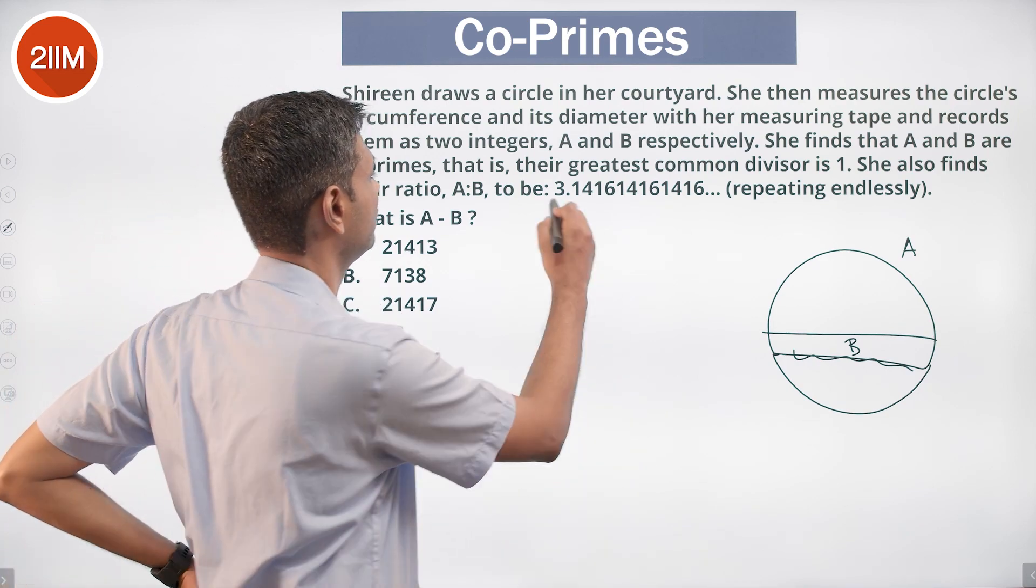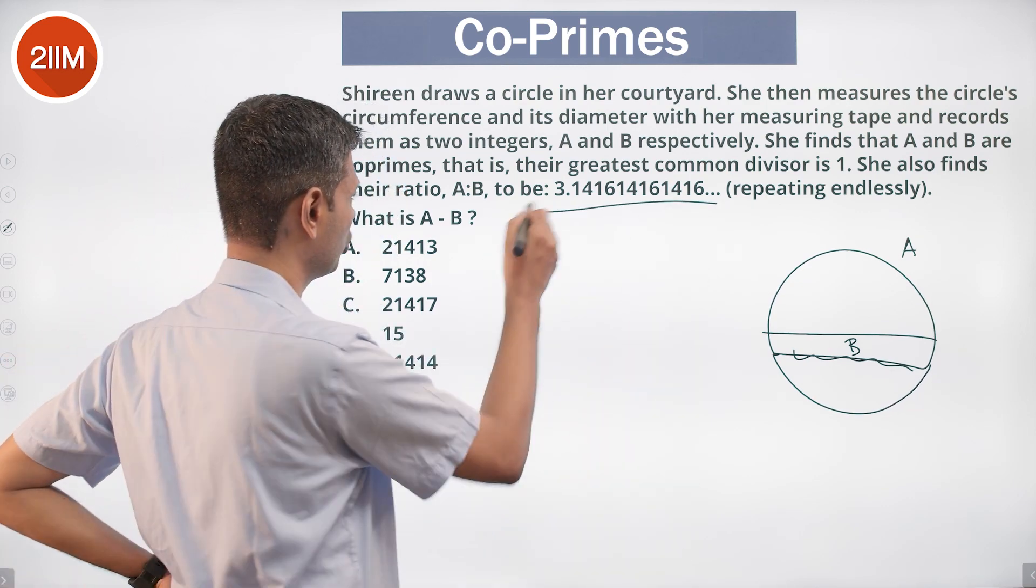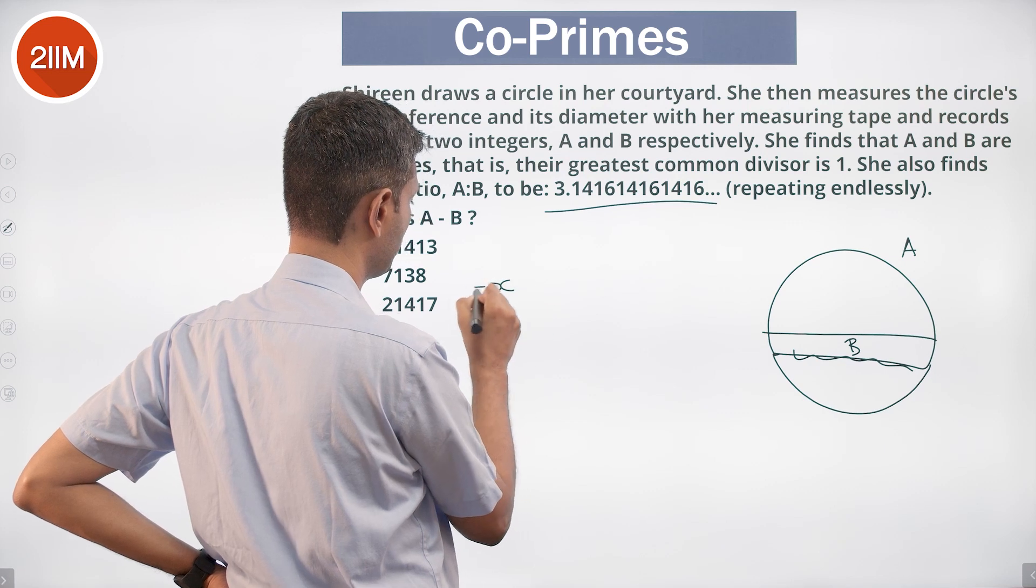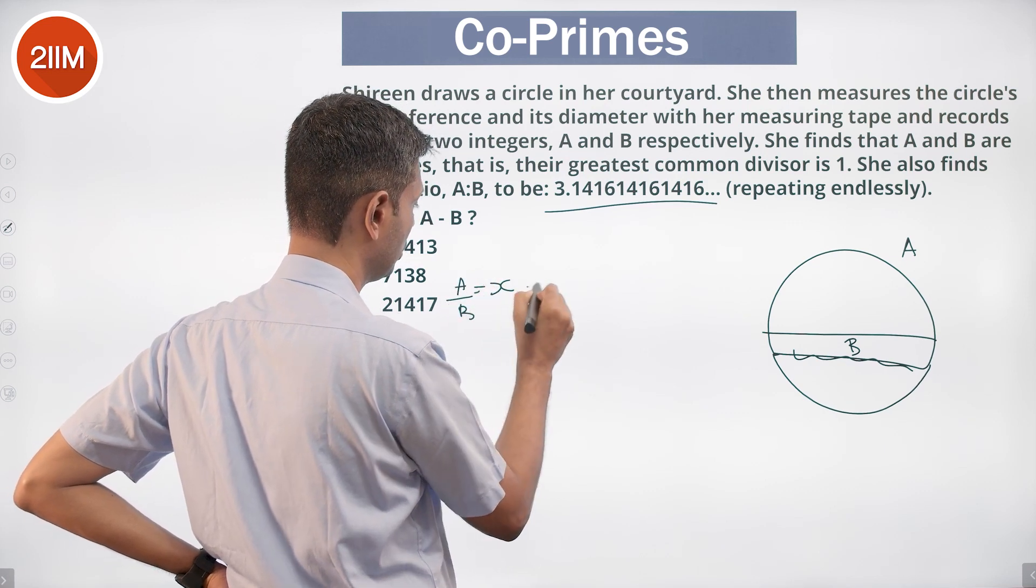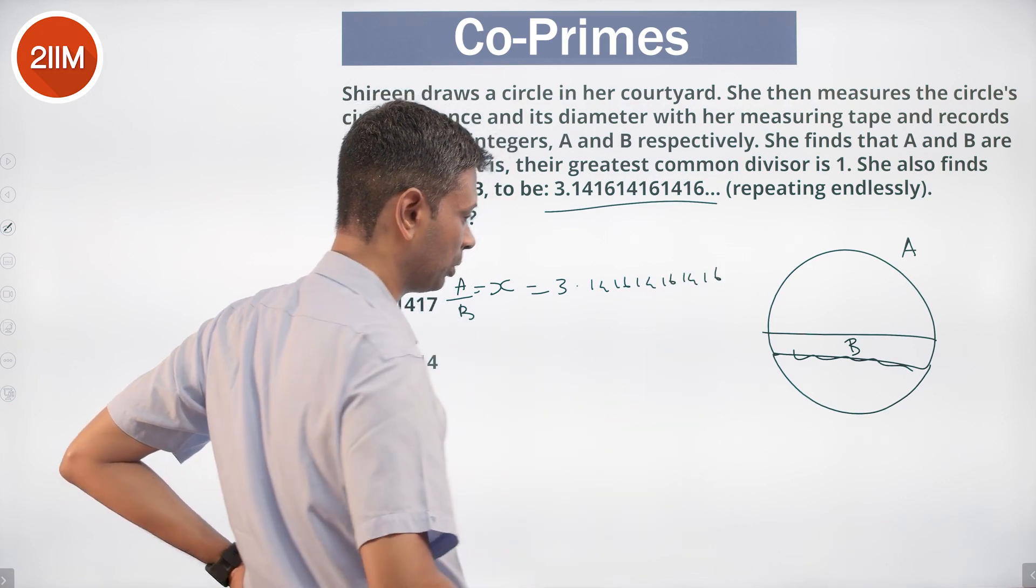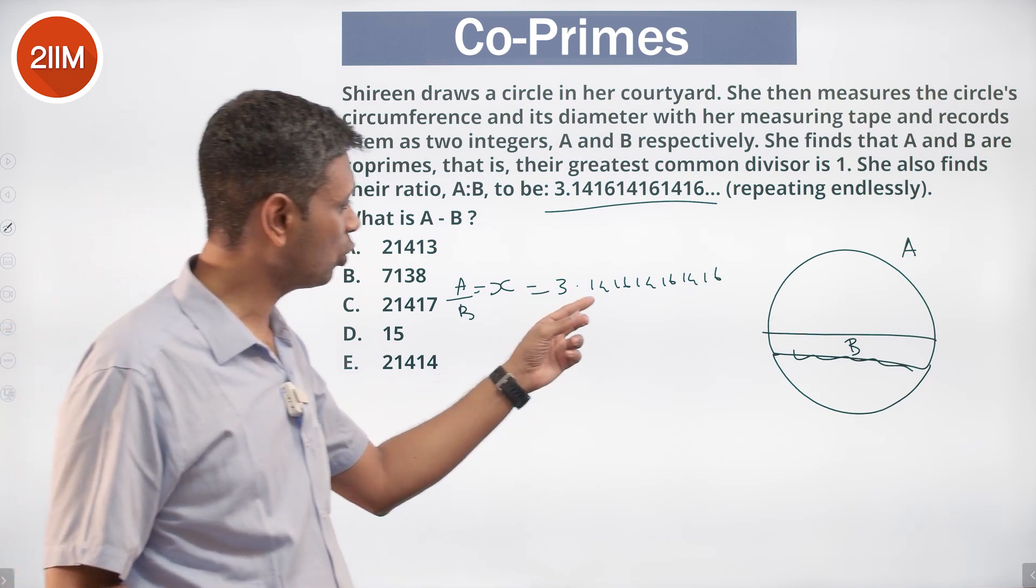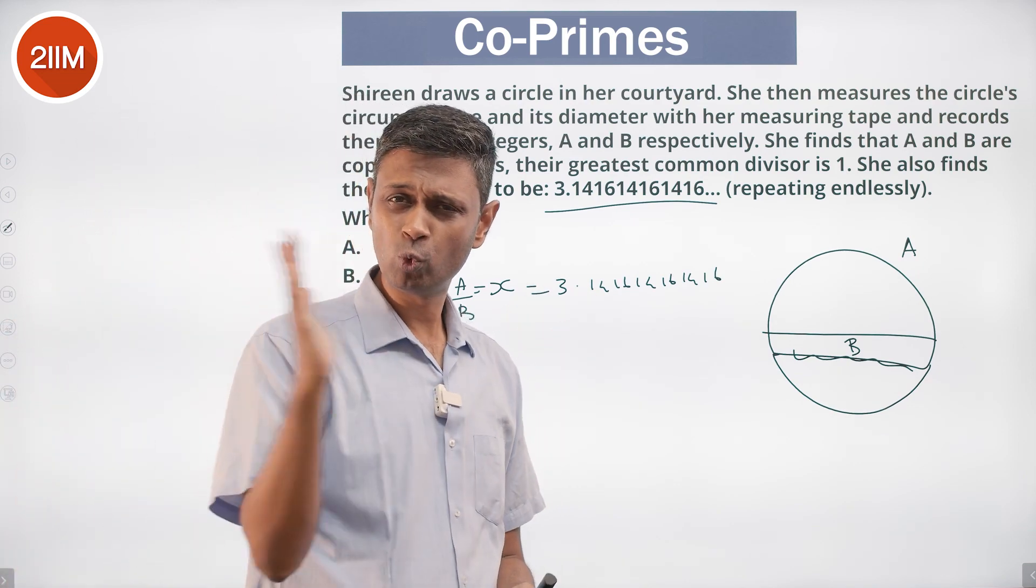We basically have to reduce this to a fraction, a rational number that gives us this. I'm going to call this as X which happens to be A by B, 3.141614161416... What am I going to do? I'm going to multiply this by 10,000. Why? 1416 is the recurring component. I move that completely.